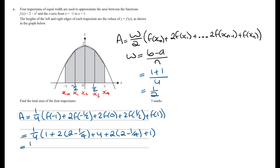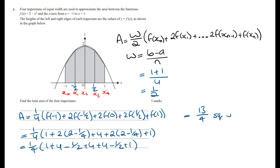Expanding this we get 1 on 4 times 1 plus 4 minus a half plus 4 plus 4 minus a half plus 1. Cleaning this up, this is 4 times 3 which is 12, plus 2 which is 14, then minus 1 which equals 13. So this equals 13 over 4 square units.